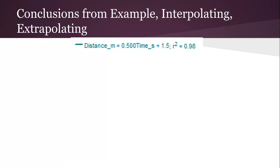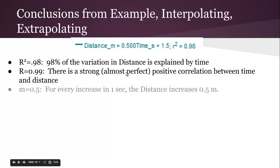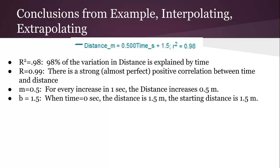Some conclusions from what we just saw. The 0.98 is 98% of the variation in distance explained by time. The 0.99 is a strong, almost perfect, positive correlation. And we know it's positive because the slope is positive. Slope means that for every increase in one second, the distance increases by 0.5 meters. The 1.5 means when time is 0.5, the distance is 1.5, so it's really starting distance.